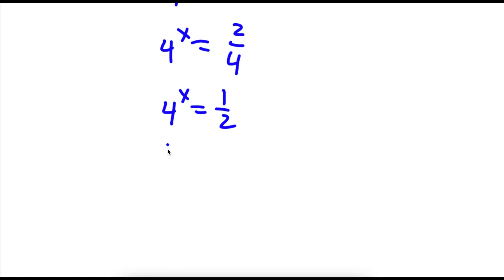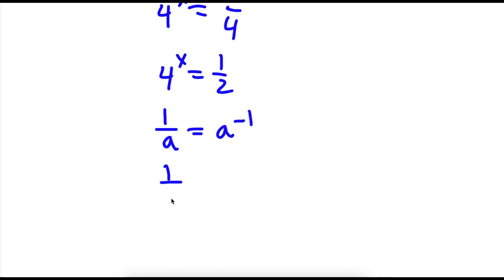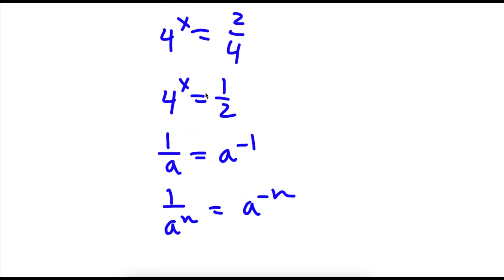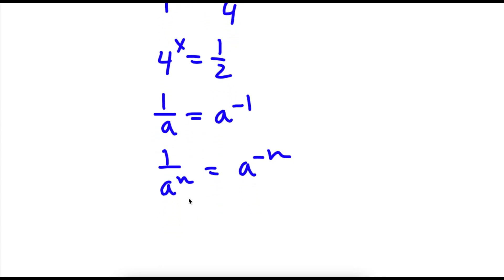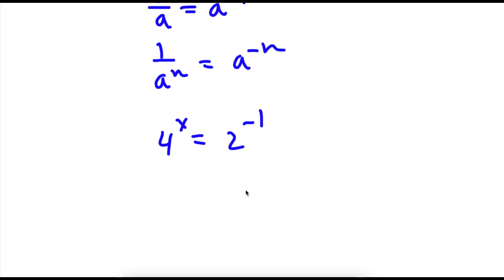Now, if I have something in the form 1 over a, this is the same thing as a to the power of negative 1. Or if I have 1 over a to the power of n, this would be the same thing as a to the power of negative n. So 1 over 2 is the same thing as 2 to the power of negative 1.